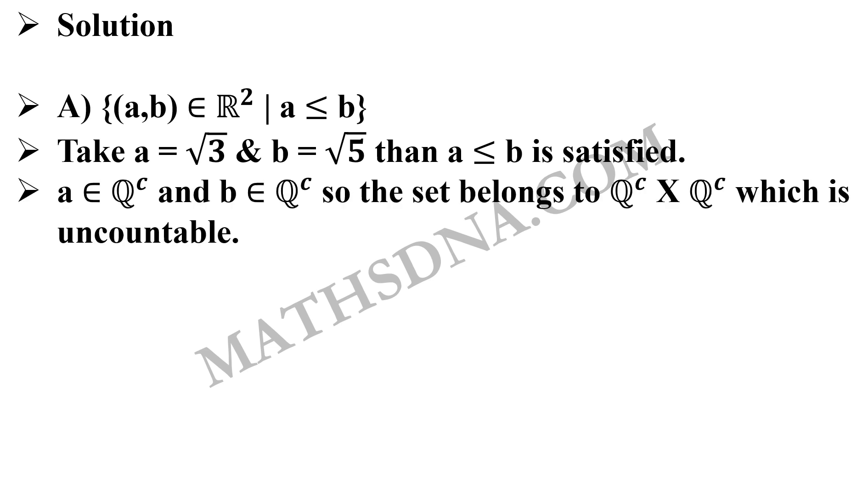So both these values will be in our given set A. And both these values belong to the set of irrational numbers, Qᶜ. a ∈ Qᶜ and b ∈ Qᶜ. So the set will be Qᶜ × Qᶜ, which is uncountable.